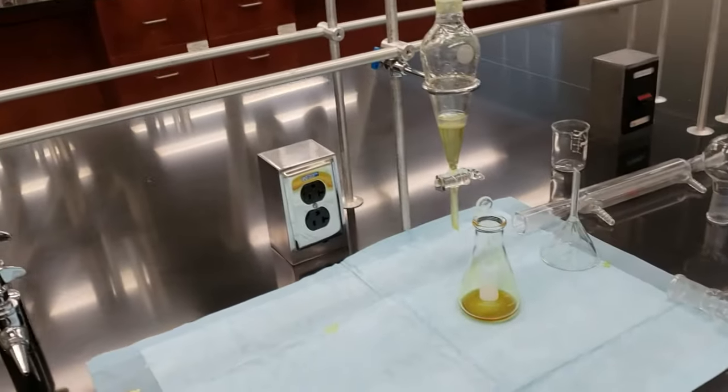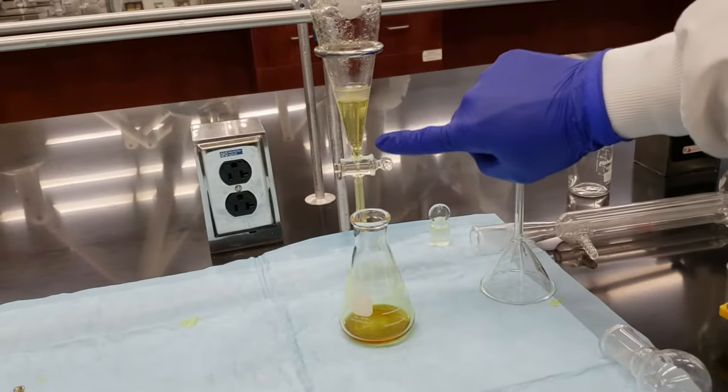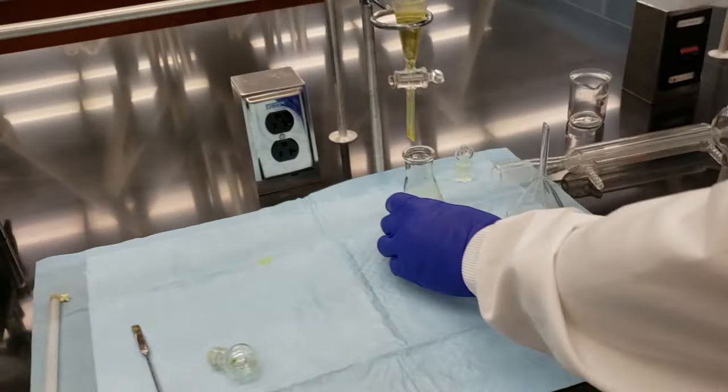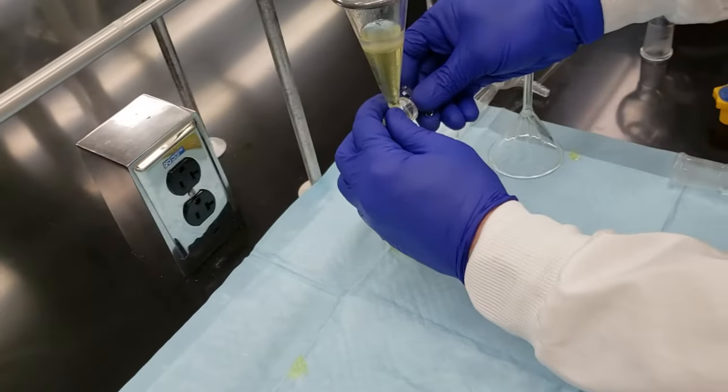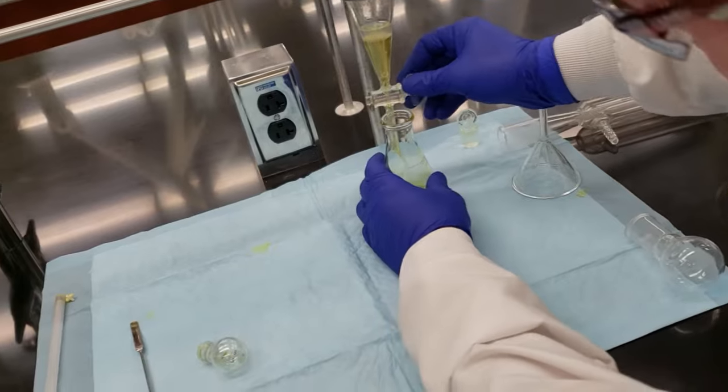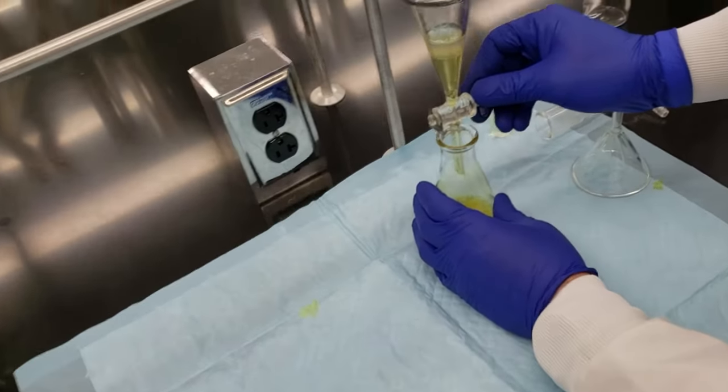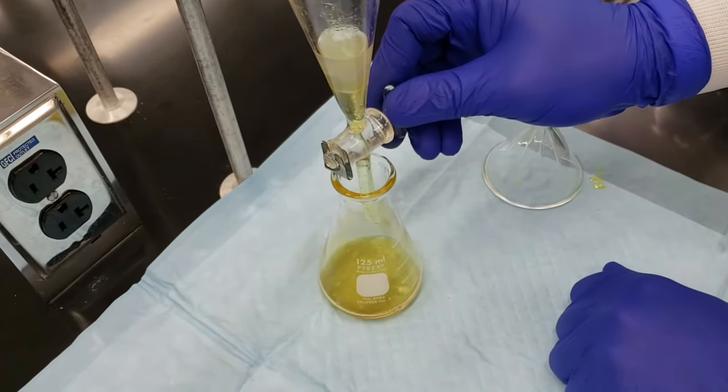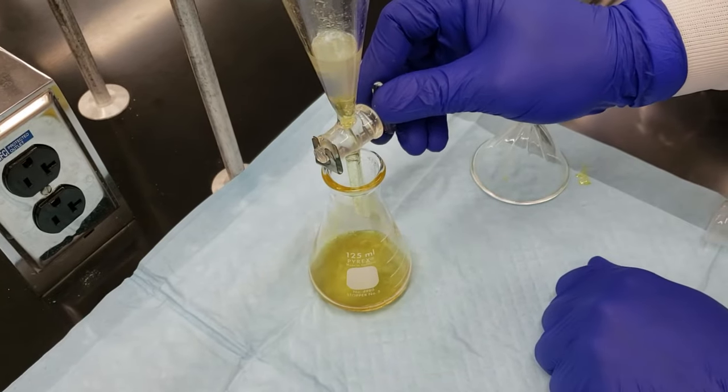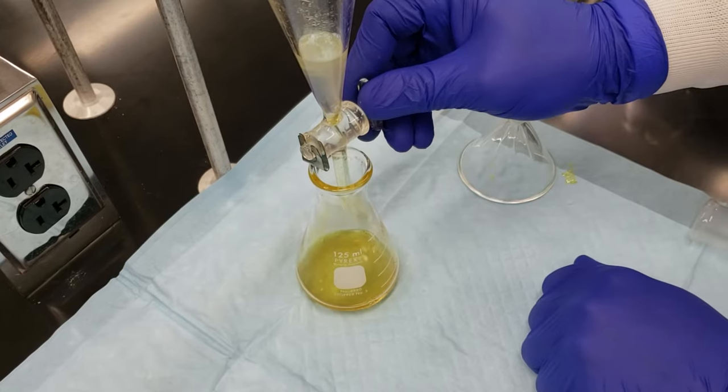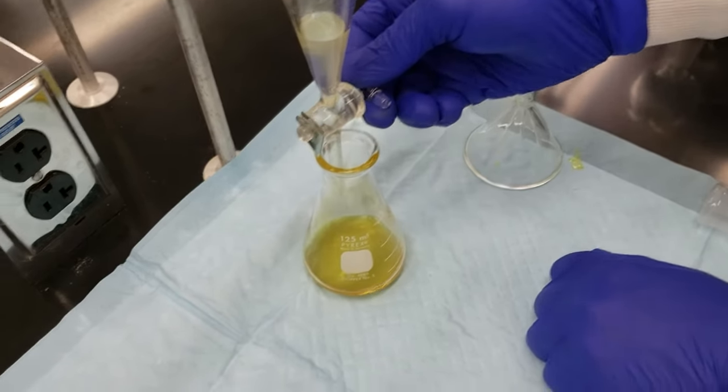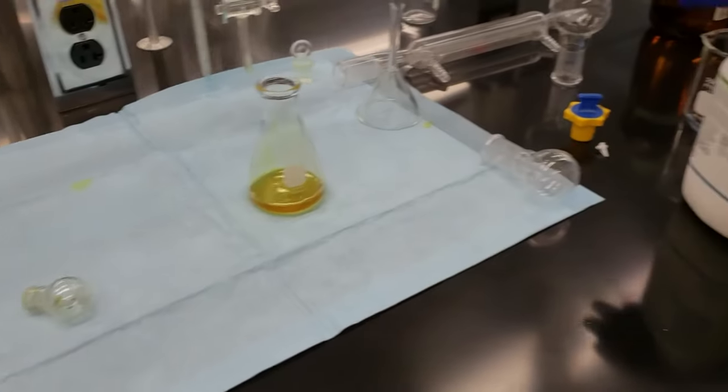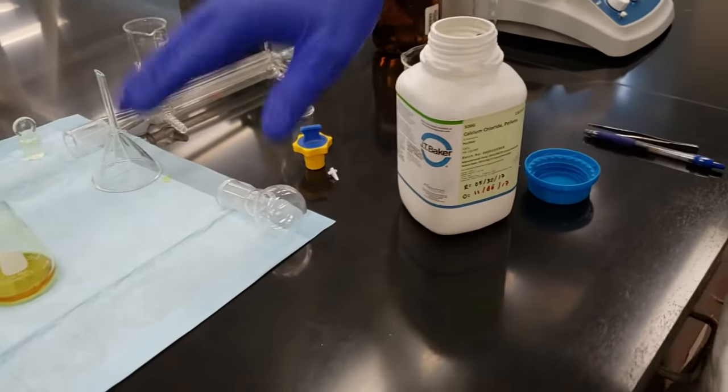So our layer has separated. We can see our yellow colored bottom layer, which is our methylene chloride. We're going to go ahead and drain that off into our 125 milliliter Erlenmeyer flask. Make sure we get right at the interface. We might get a little bit of the water. We want to make sure we get all of our product in our methylene chloride layer. If we do get a little bit of water, that's fine. We're going to go through a drying phase right now. We're going to use calcium chloride to dry this methylene chloride layer.